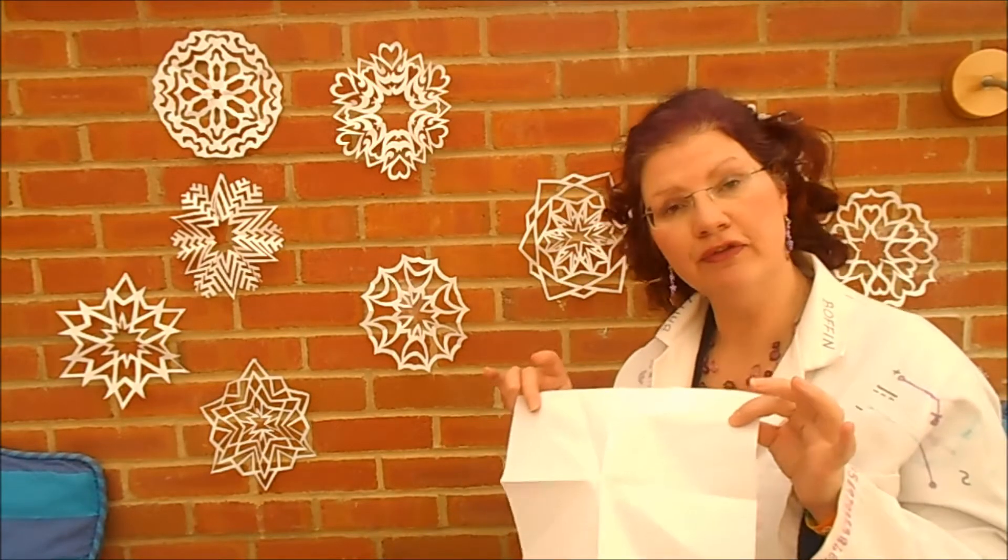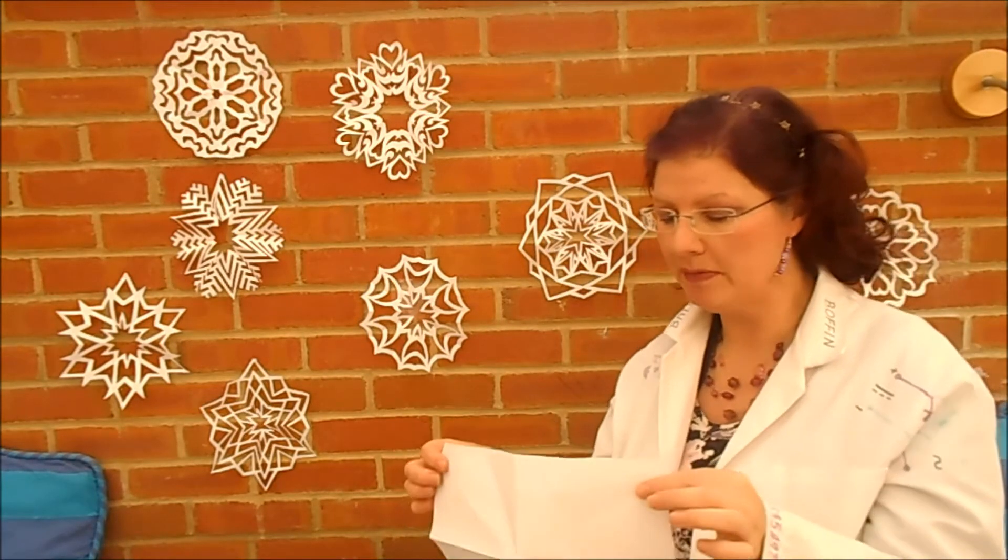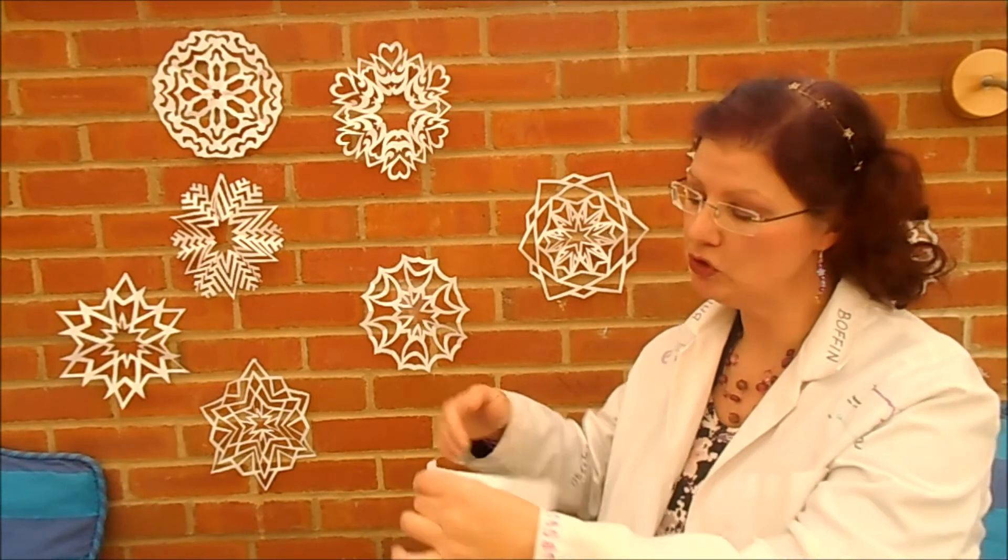So, here is how to make a six-pointed star. You're going to start off with your normal sheet of paper. I'm using A4. Letter size works perfectly well if you're in America.